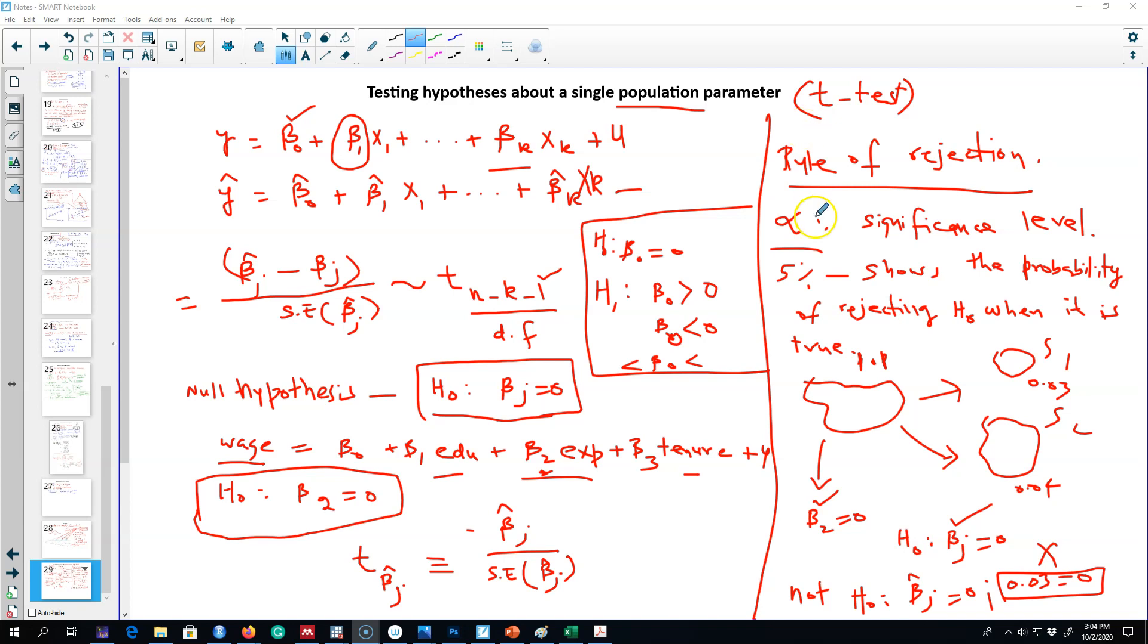Before we do anything, we have to do two things. First, we have to set up our null and alternative hypotheses. The next one is we have to set a rule of rejection using alpha, which is the probability of rejecting H0 when it is true.